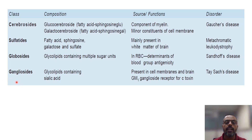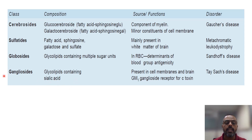The fourth and last glycolipid is the gangliosides. Gangliosides contain NaNa, that is N-acetylneuraminic acid, which is also known as sialic acid. Gangliosides are present in the gray matter of the brain.